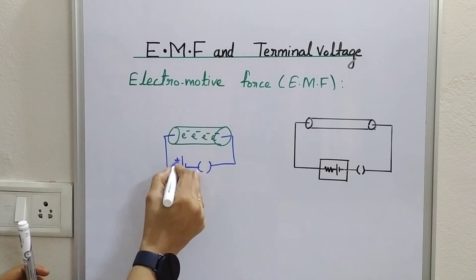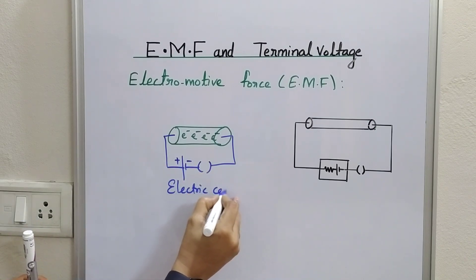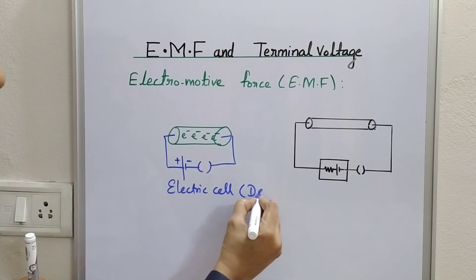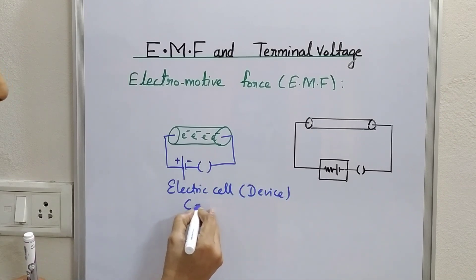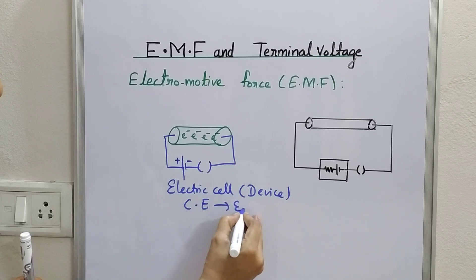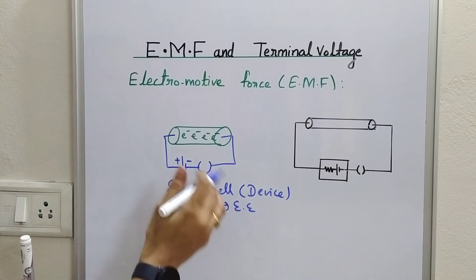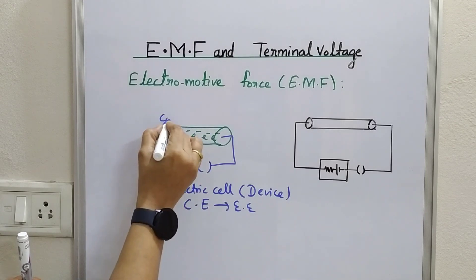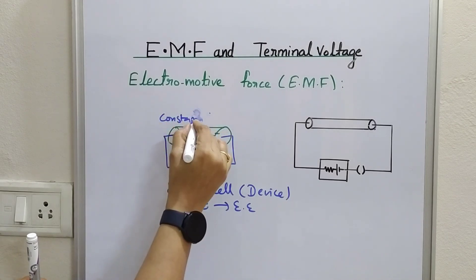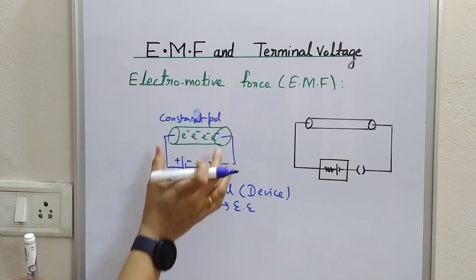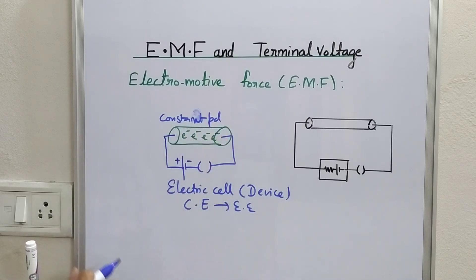An electric cell is a device that converts chemical energy to electrical energy. In this process, it sets up a constant potential difference across the ends of the conductor.